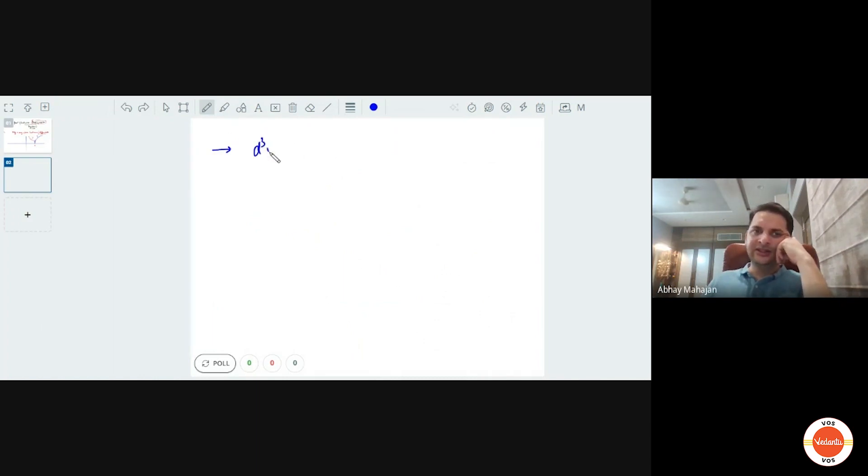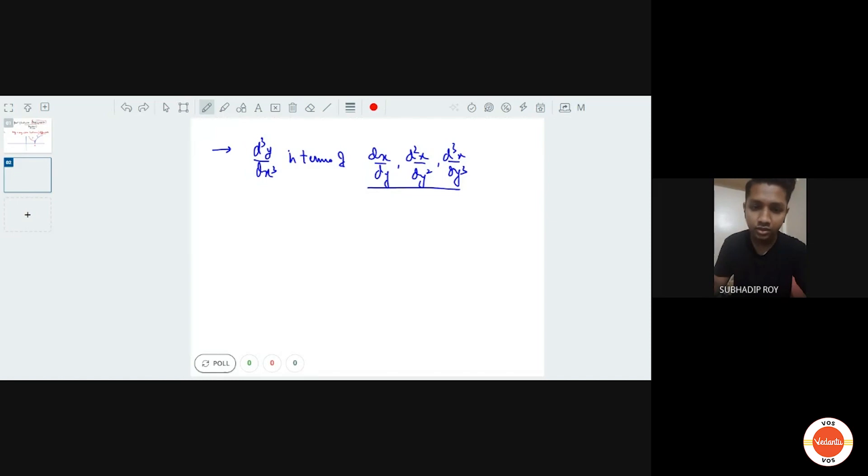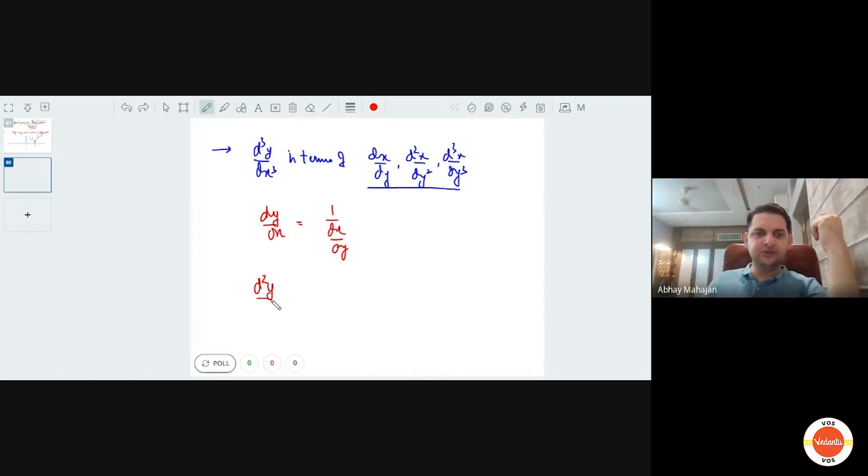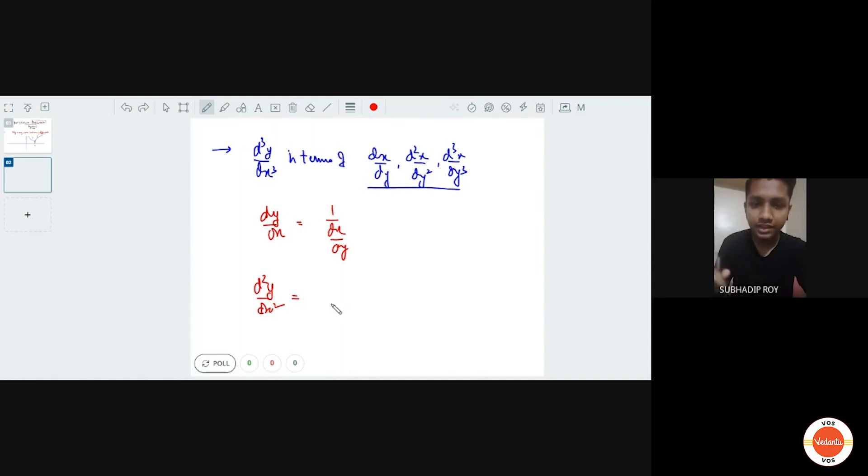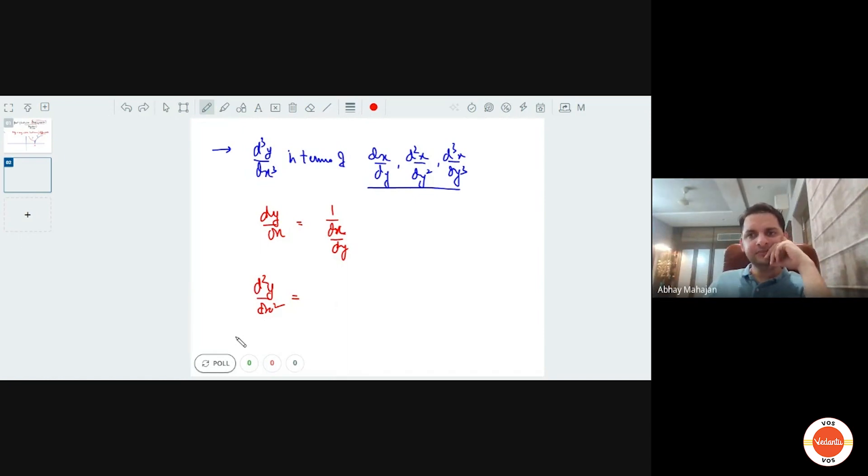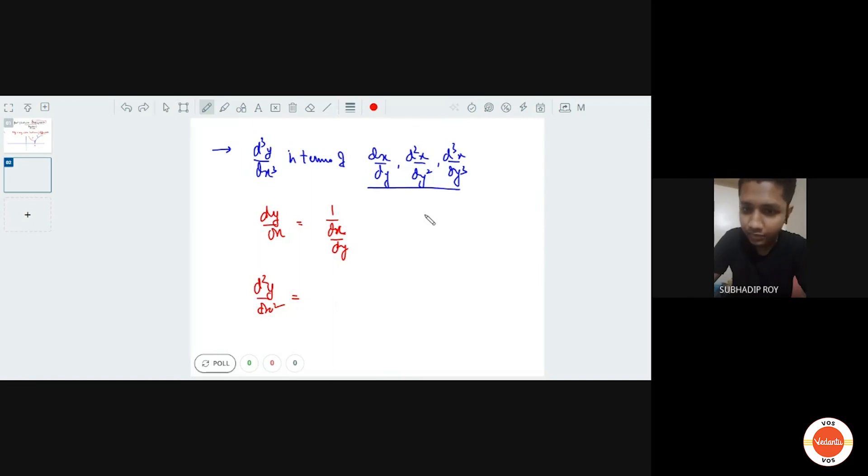So can you define d3y by dx cube in terms of dx by dy, d2x by dy2, and d3x by dy3? Yeah. So can you think out aloud? Yes, sir. I got that dy by dx is 1 upon dx by dy. So now I can differentiate both sides with respect to x. So it will be d square y by dx square equals to 1 by dx by dy whole square. So it is minus dx by dy2. d2y by dx2 would be? Equals to, wait sir. Okay, can you think out aloud? Yes, sir. I just first considered y equals to f(x). So dy by dx equals to f dash x and dx by dy is 1 by f dash x. So I got that dy by dx equals to 1 upon dx by dy.